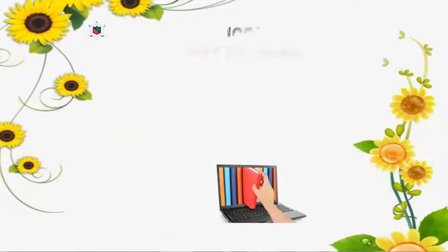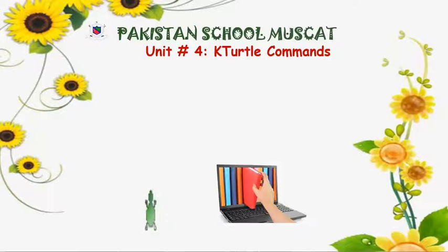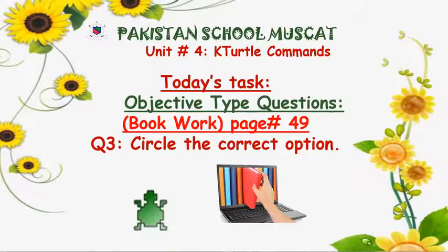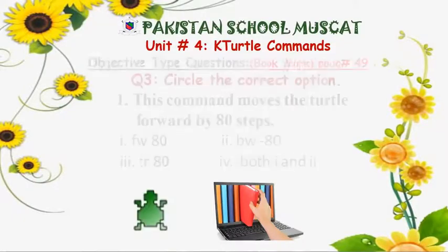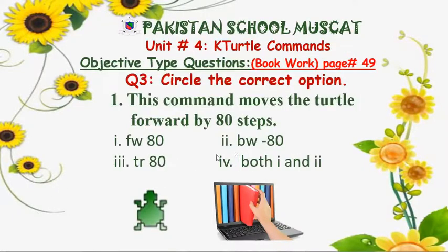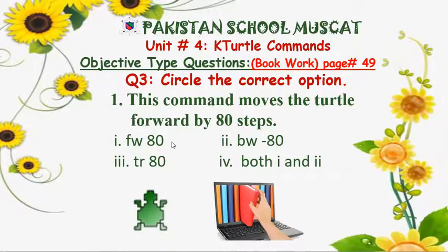Now we move on to today's work. This is book work from page 49, question number 3 — circle the correct option. Part A: this command moves the turtle forward by 80 steps. The options are: (1) fw 80, (2) bw minus 80, (3) tr 80, or (4) both first and second.